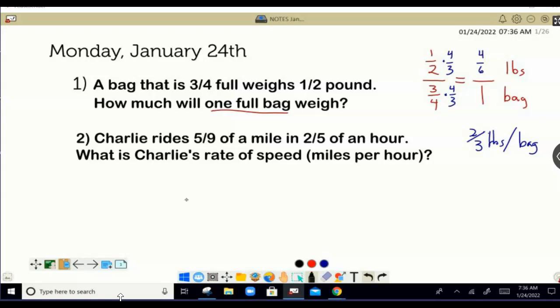All right, let me go ahead and set up our unit rate. I want to know speed miles per hour. I need to make sure hours are on the second term, the bottom here. Two-fifths of an hour, five-ninths of a mile. So this is going to require me to multiply by the reciprocal.